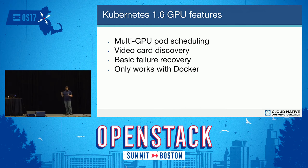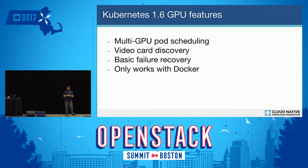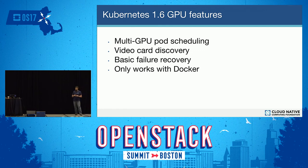In Kubernetes 1.6, just released a few weeks ago, a lot of work went into making the GPU experience better. It's officially reached the alpha stage, so you can have multiple pods on your nodes — a pod in Kubernetes is just your unit of work. Video card discovery is doing better, now using some fancy regex to figure out any active video cards it can expose. The basic failure recovery is in there. The only problem at the moment is it only works with Docker, due to some interesting handoff between the Kubelet and figuring out what containers are actively using things.